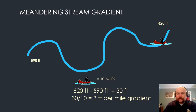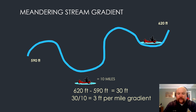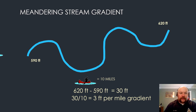To understand stream gradient you have to think about the change in elevation over a certain amount of distance. This constitutes the stream's energy through a reach. In this particular example we have a change in elevation of 30 feet over a 10-mile float, as we see our canoeist go here. That's a three foot per mile gradient. This is an unaltered stream.